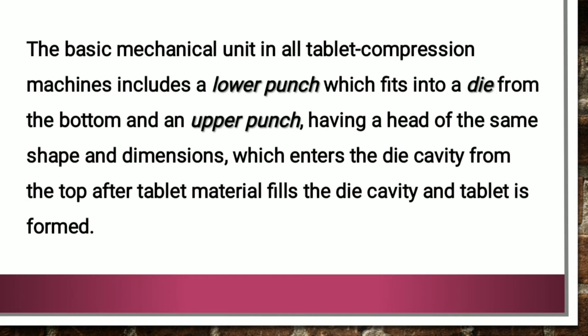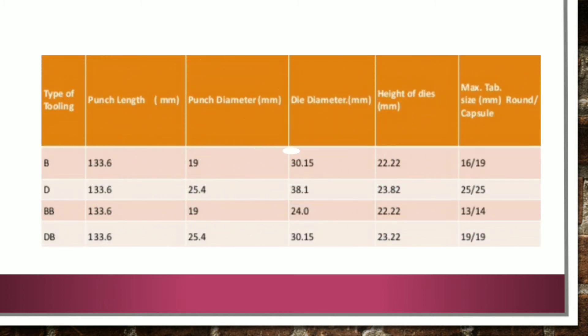The basic mechanical unit in all tablet compression machines includes a lower punch which fits into a die from the bottom, and an upper punch having the head of the same shape and dimensions, which enters the die cavity from the top. After tablet material is filled in the die cavity, the tablet is formed. In a single station tablet punching machine, the upper punch and lower punch are similar to the die so they fit into the shape and produce the desired tablet.